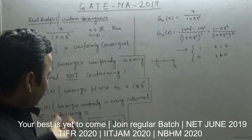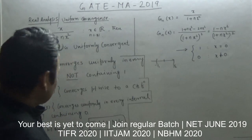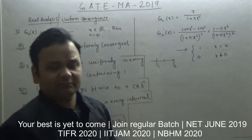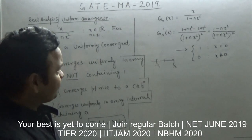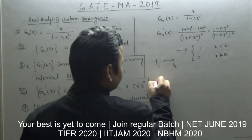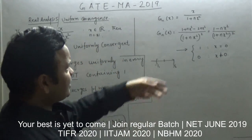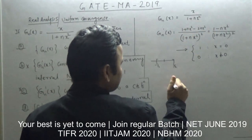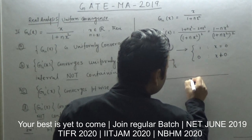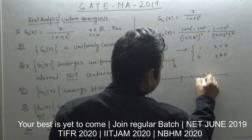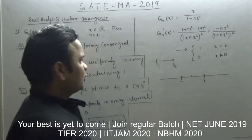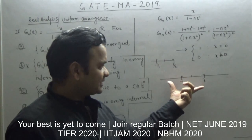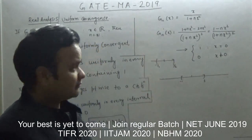Option D I leave as an exercise — please do it and write your answer in the comments. Now let's look at option A: what can we say about g_n itself — does it converge uniformly or not? To analyze g_n(x) = x/(1 + nx²) on the real line, there are two cases: |x| ≤ 1 and |x| > 1.